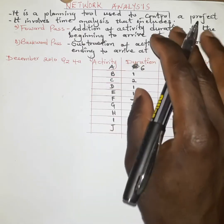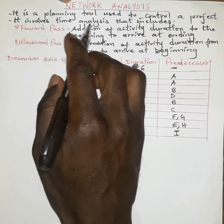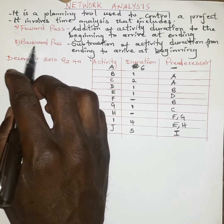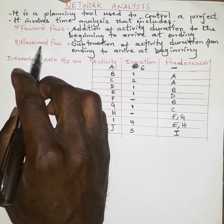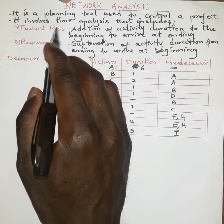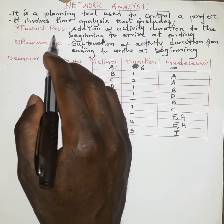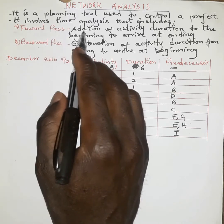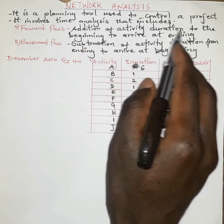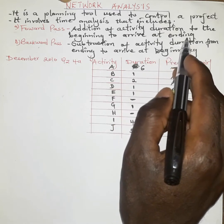As you try to control a particular project, we are talking about time analysis, which includes forward pass and backward pass. Our steps are going to involve these two particular terms. When we talk about forward pass, we are talking about the addition of an activity duration to the beginning to arrive at the ending.